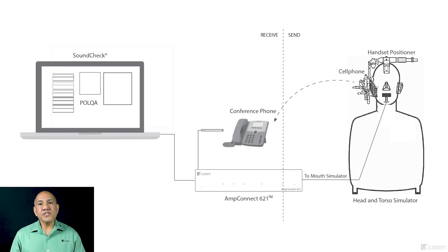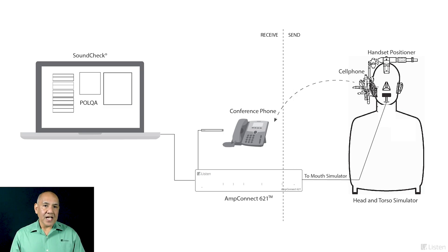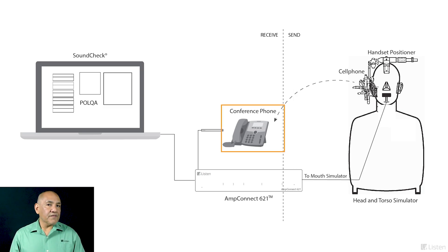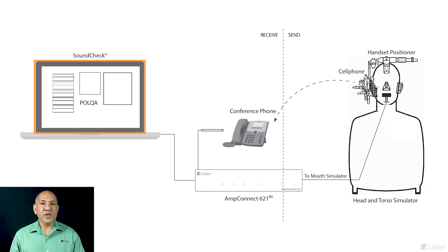Here is an example of another possible POLQA test. In this setup, an end-to-end call can be established — for example, a call can be made to a conference phone, which is the device under test. The signal on the receiving end is recorded and analyzed for speech quality.